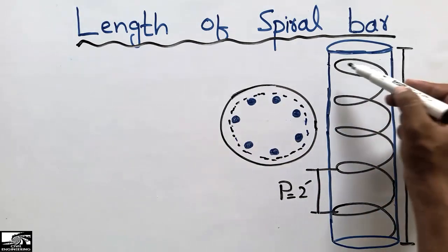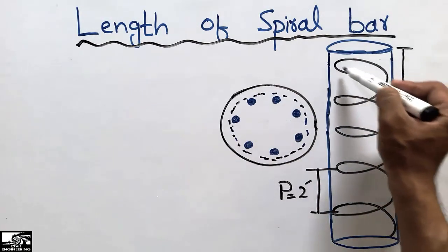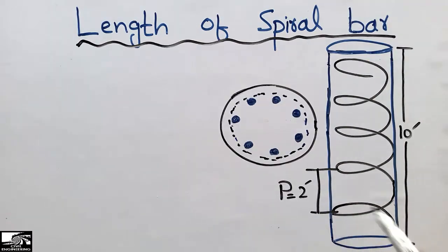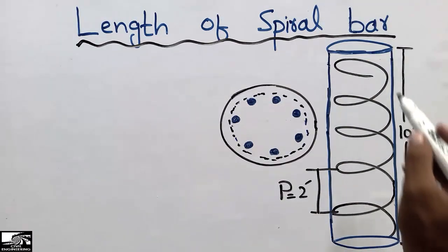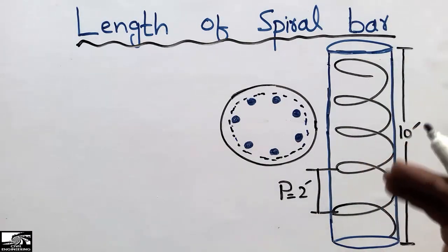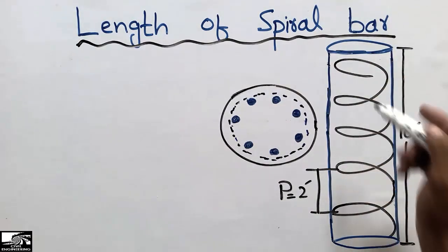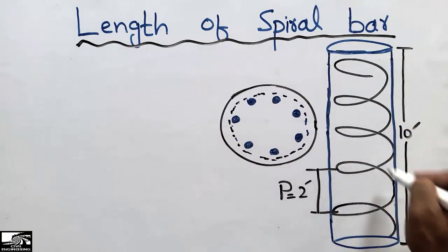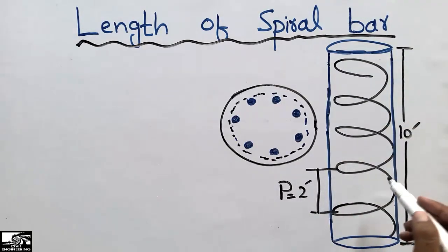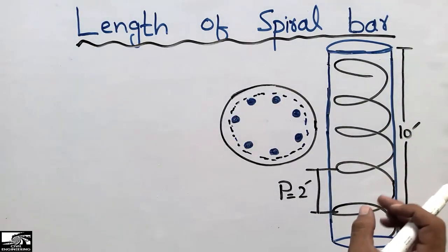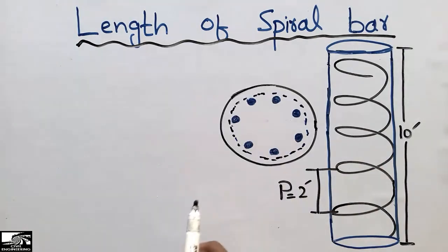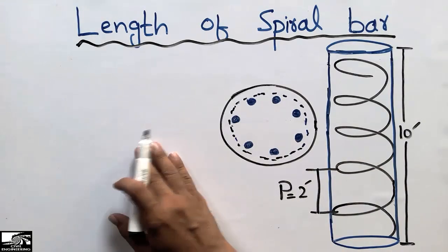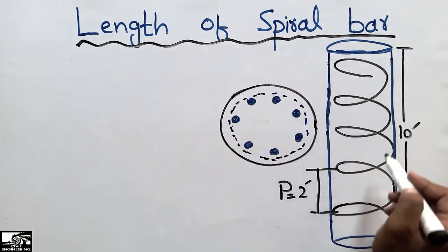In this lecture we want to find the length of the spiral bar — how much is the length of the spiral bar — because in exams and interviews they sometimes put a question on you about how to find the length of this spiral or helix bar. This bar is sometimes called a helix bar.